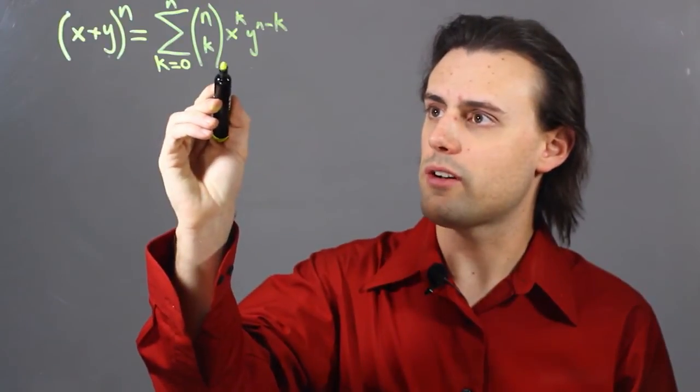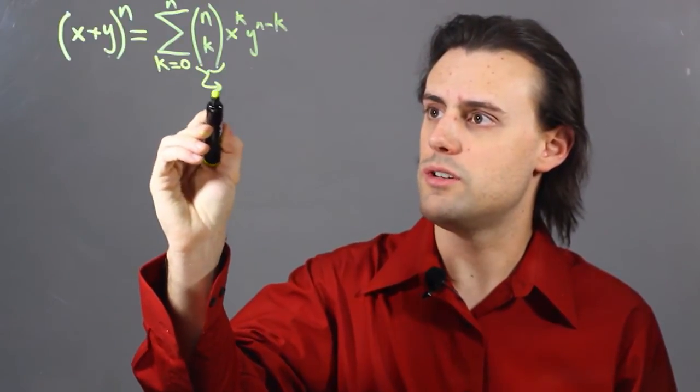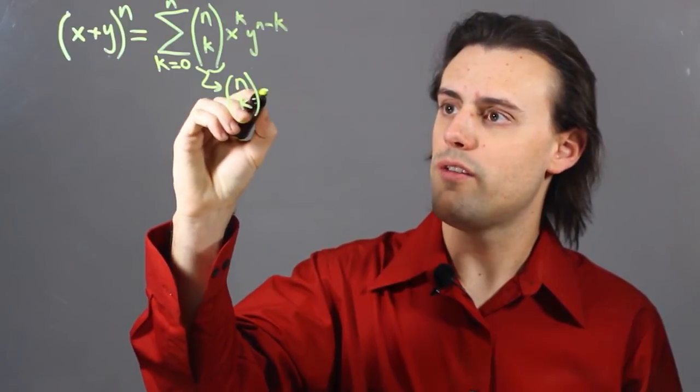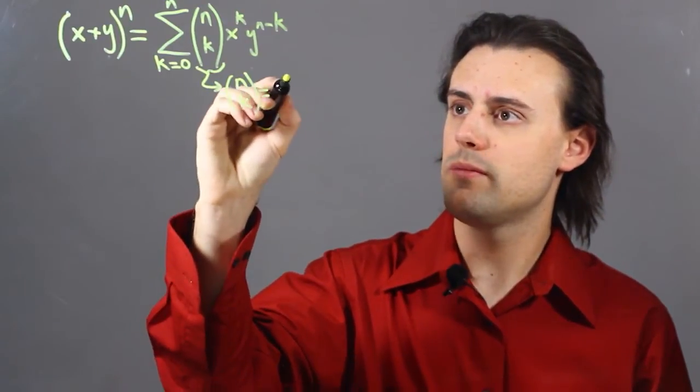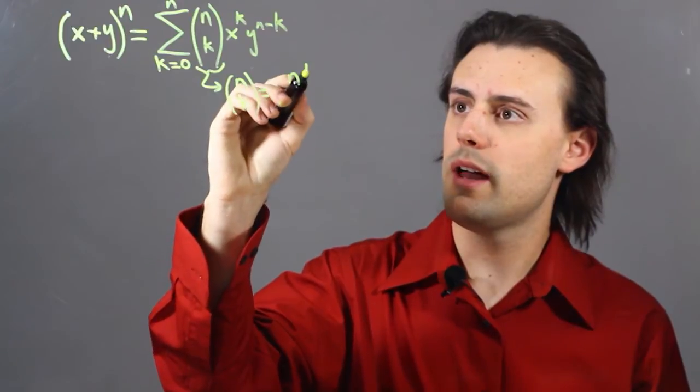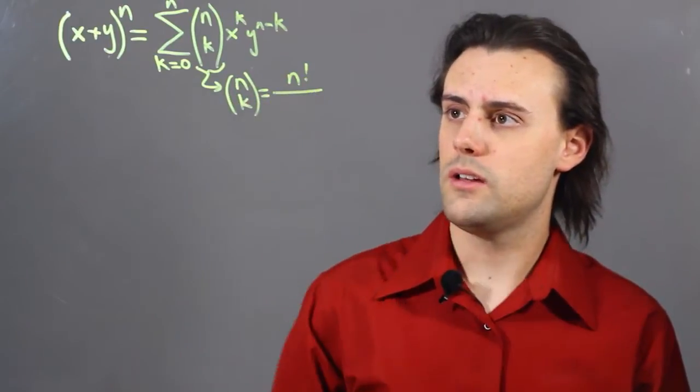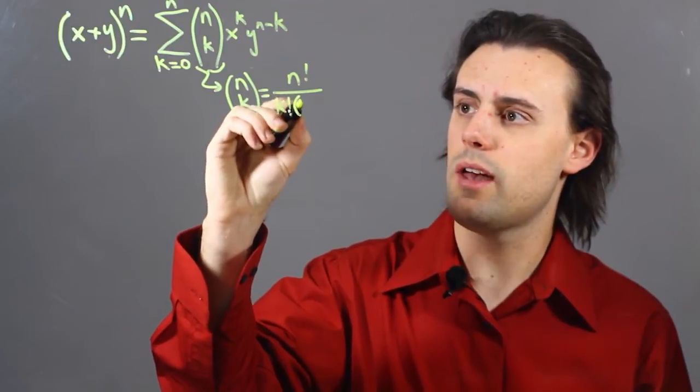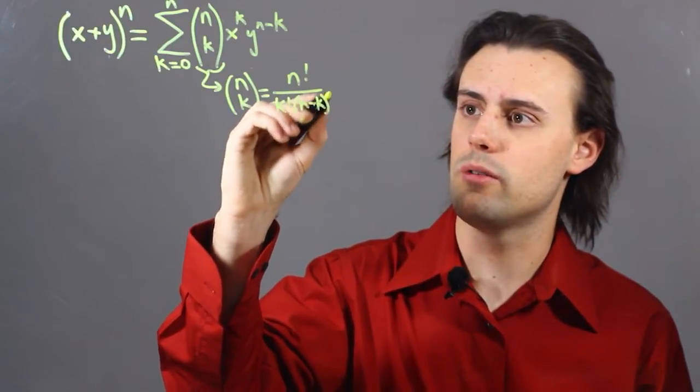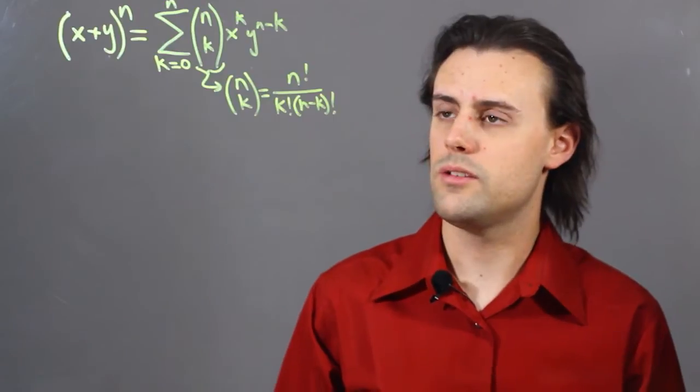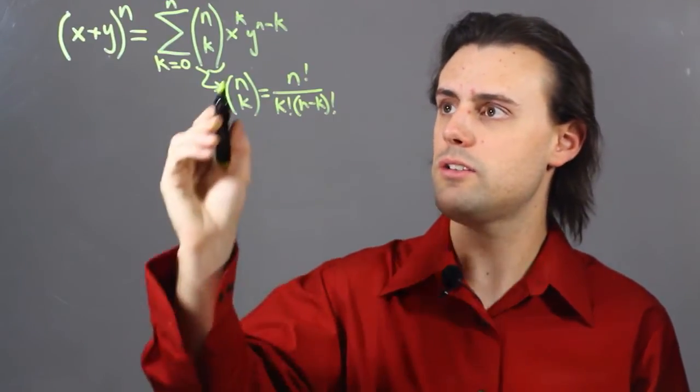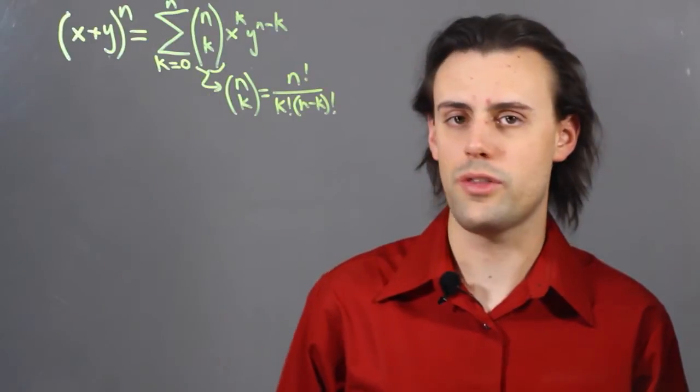This multiplicity factor I should denote as a function of n and k, and it's equal to n factorial divided by k factorial times n minus k factorial. This is very widely used in many fields and will be integral to the binomial theorem.